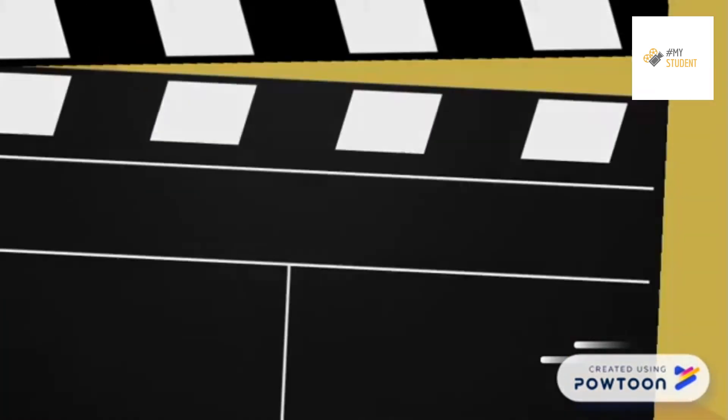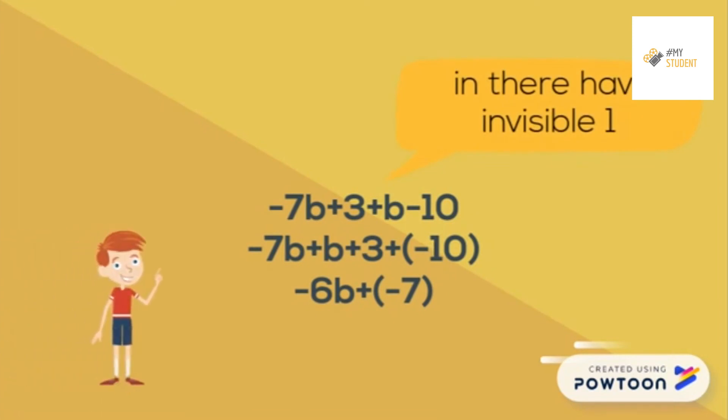Negative 7b plus 3 plus b minus 10. Negative 7b plus b plus 3 plus negative 10. When we simplify it, the answer will be negative 6b plus negative 7.